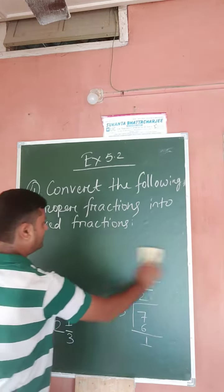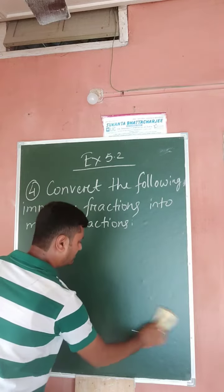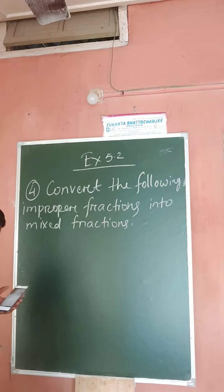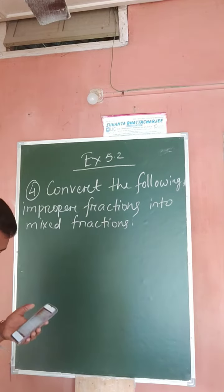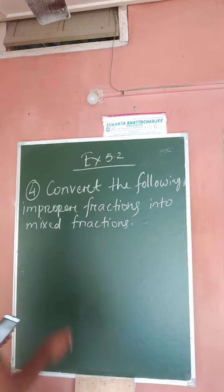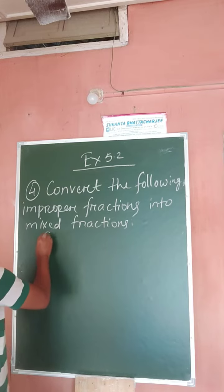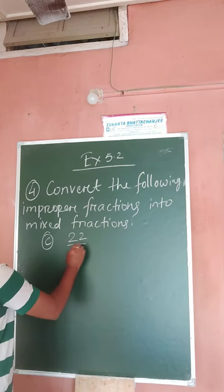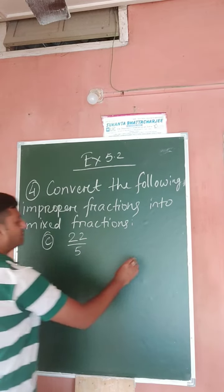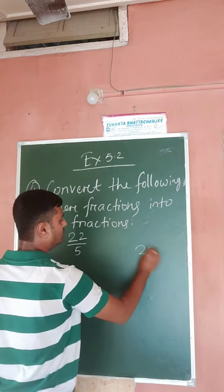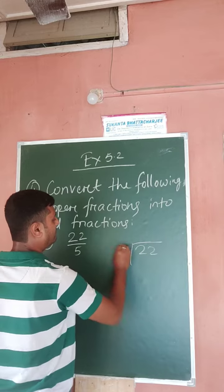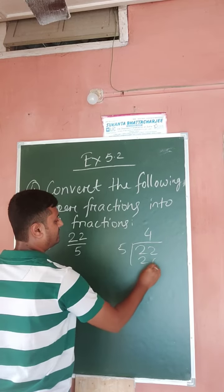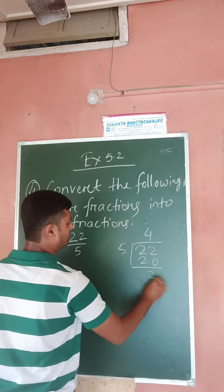Now come to question number C: 22/5. Twenty-two divided by five — five fours are twenty — so the quotient is four and the remainder is two.